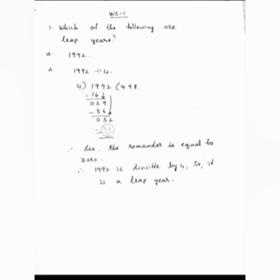4 times 8 is 32. Then do subtraction. 32 minus 32 is 0. Therefore, the remainder is equal to 0, so the year 1992 is divisible by 4. It is a leap year.